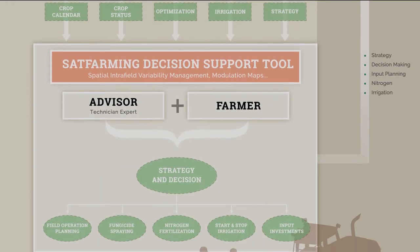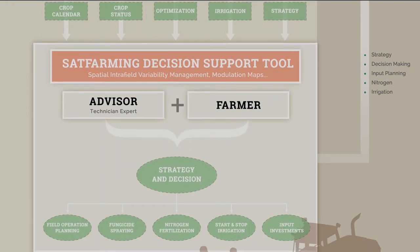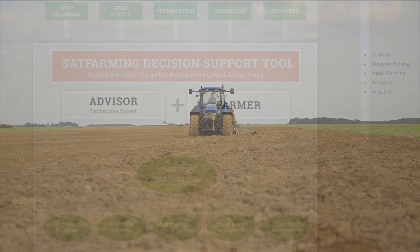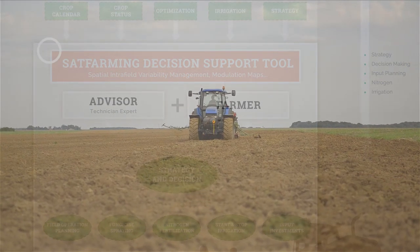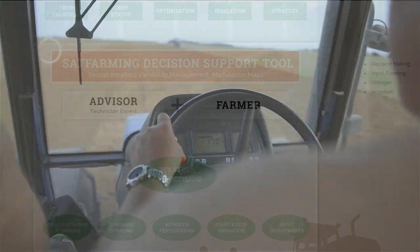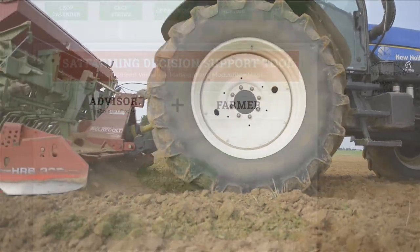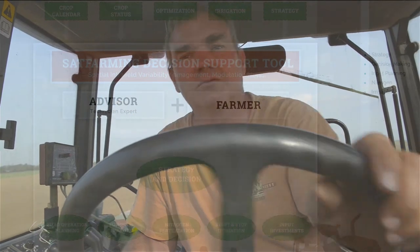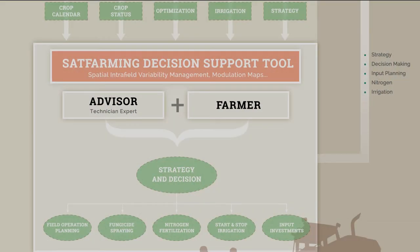The manager, in collaboration with an agronomist or technician expert, has a decision support tool to optimize his agricultural options. The system is a dynamic process which is daily fed by weather data and around weekly by satellite imagery, depending on cloud cover, from the sowing date till the harvest.